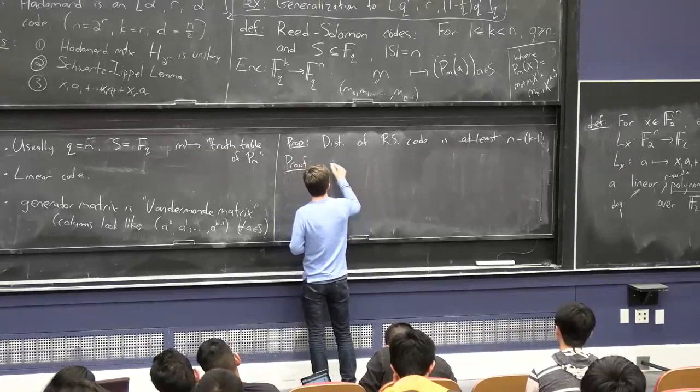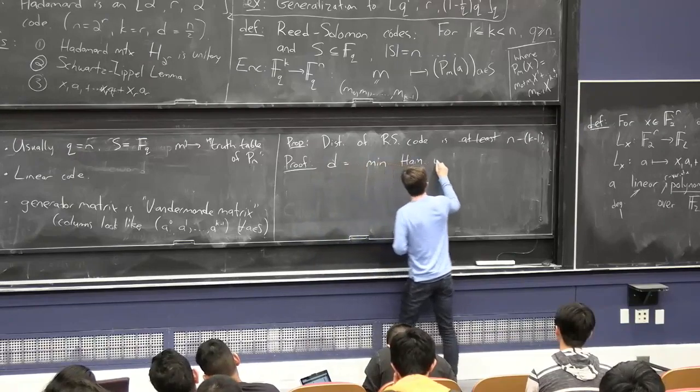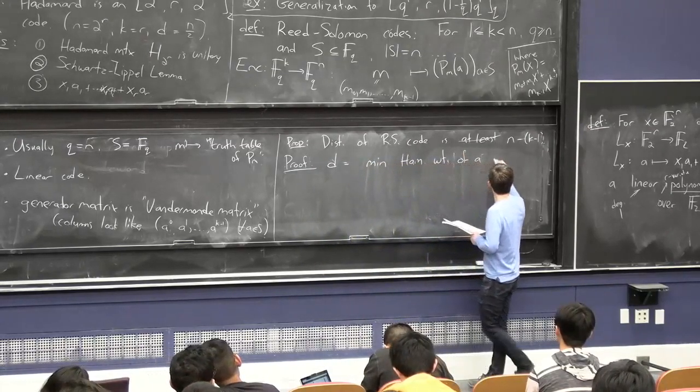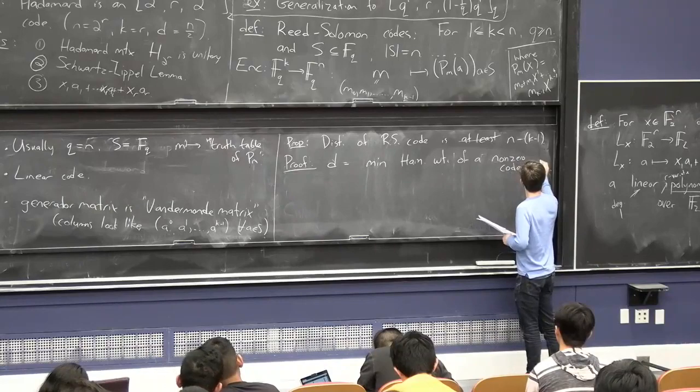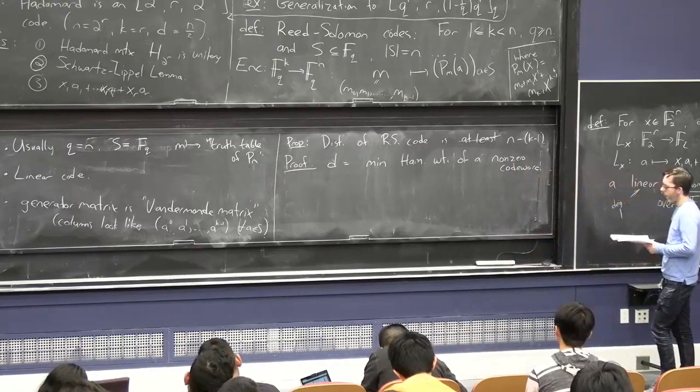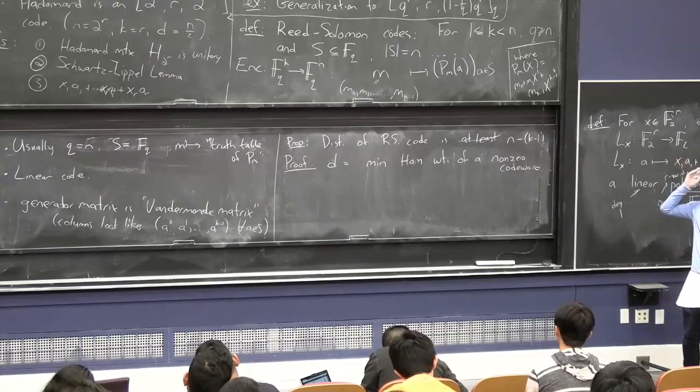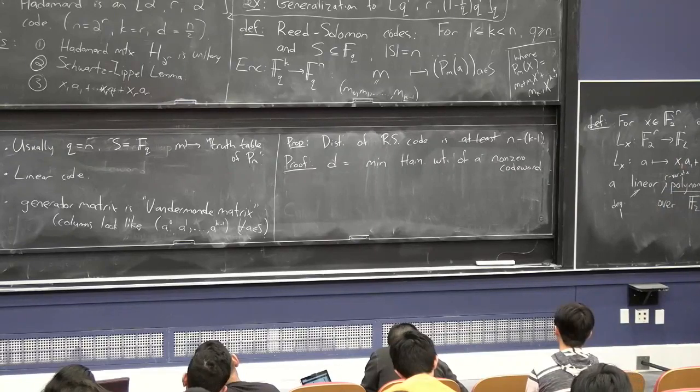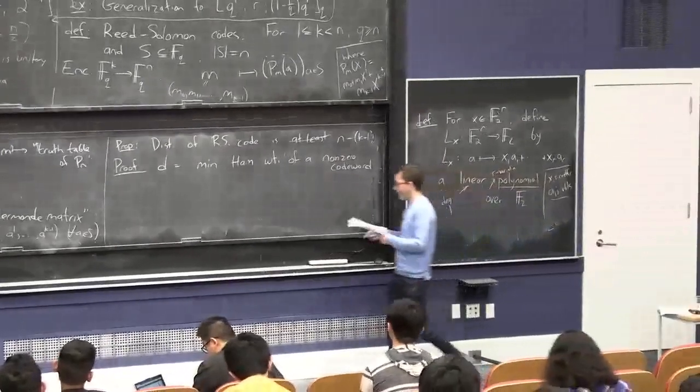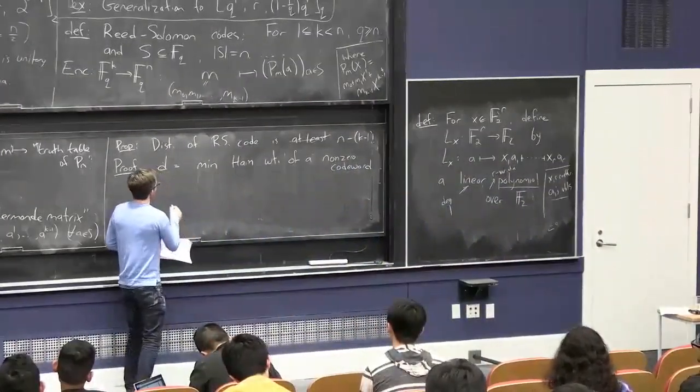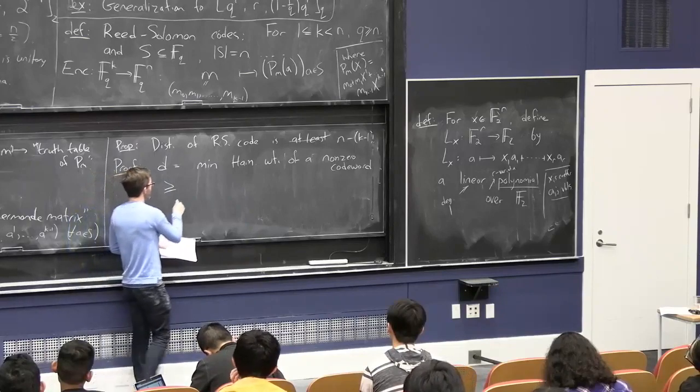Let's see the proof of this. Well, since it's a linear code, we know that the distance d is the minimum Hamming weight of a non-zero codeword. First of all, how could you have a non-zero codeword? It means the truth table of your polynomial is all zeros. So that's going to mean that the coefficients are all zeros. But in particular...